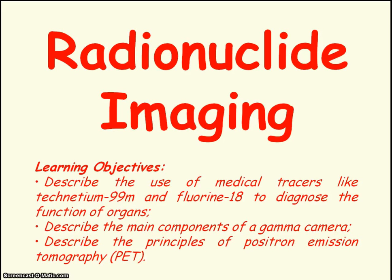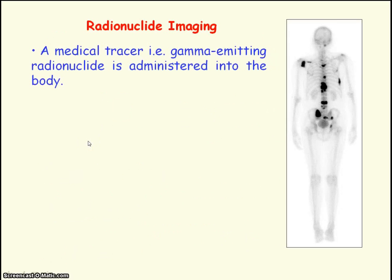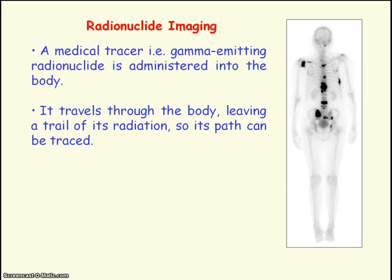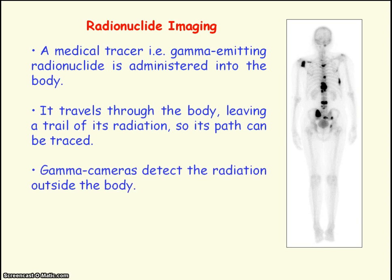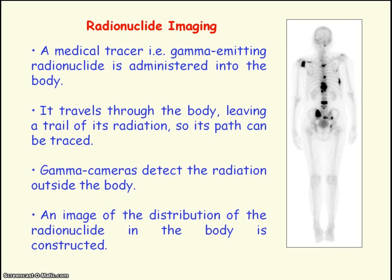We're going to be looking at radionuclide imaging. This involves administering into the body — that means ingesting or injecting — a medical tracer, which is a gamma-emitting radioactive substance. The tracer then travels through the body emitting its radiation, so its path can be traced by detecting the radiation outside of the body using gamma cameras. A computer is used to construct an image of the distribution of the tracer inside the body.